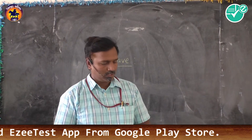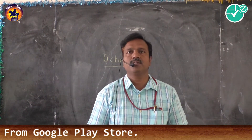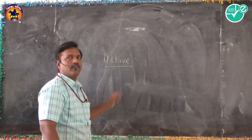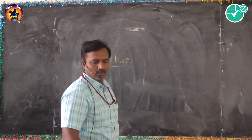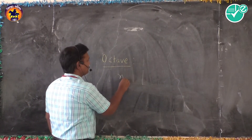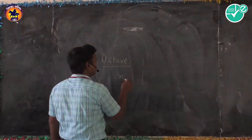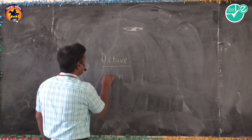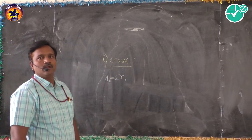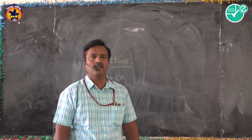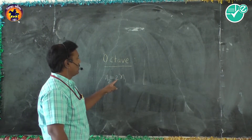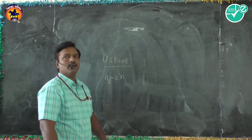Octave is the tone whose frequency is double the fundamental frequency. If the fundamental frequency is n1, then n2 is the octave of that fundamental frequency, where n2 = 2 × n1.